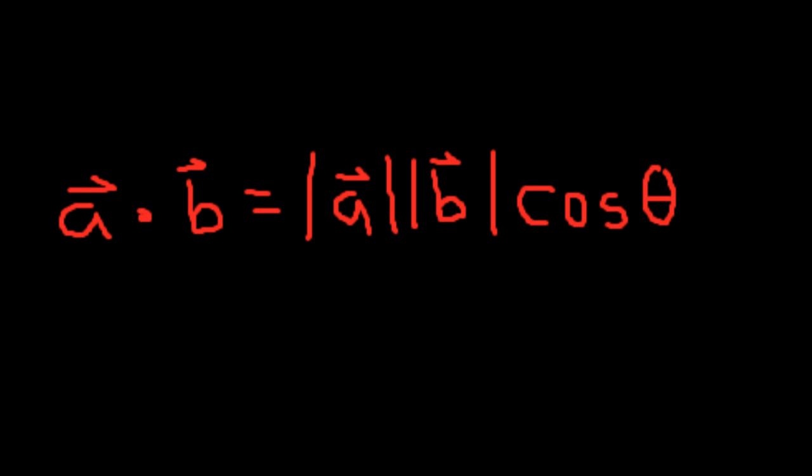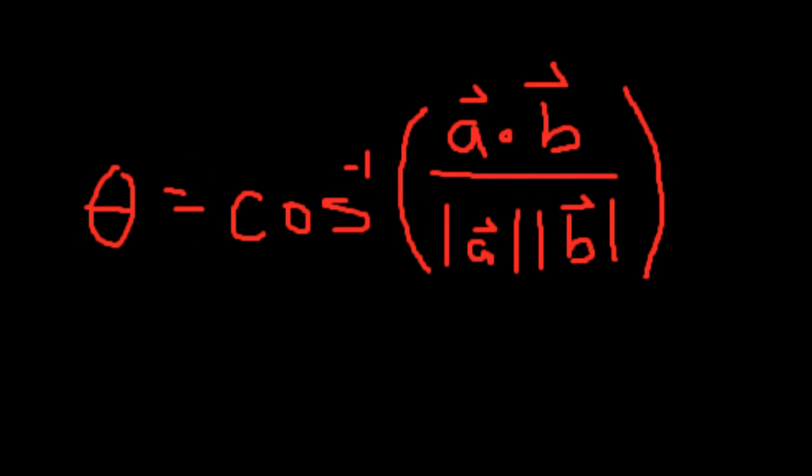There is a very important trigonometric property of the dot product that relates the dot product to the lengths of the two vectors and the angle between them. The dot product of A and B is equal to the length of A times the length of B times the cosine of the angle between the two. This identity is commonly used to determine the angle between the two vectors. Theta, which is the angle between the two, is equal to the inverse cosine of the dot product of A and B divided by the length of A times the length of B.